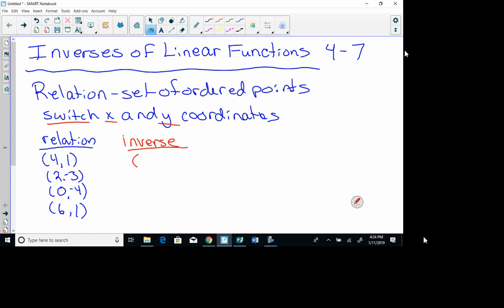So, what I'm going to do now is I'm going to write the inverse of that relation. And so, what I'm going to do is I'm going to switch x and y. So, 4 is x, 1 is y. So, I'm going to switch those around. So, the inverse is (1, 4), (-3, 2), (-4, 0), and (1, 6). So, that's the inverse. That's the inverse of that relation.